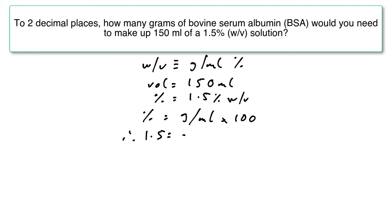So we know that 1.5 is equal to the number of grams divided by the volume, which is 150 mils, multiplied by 100.